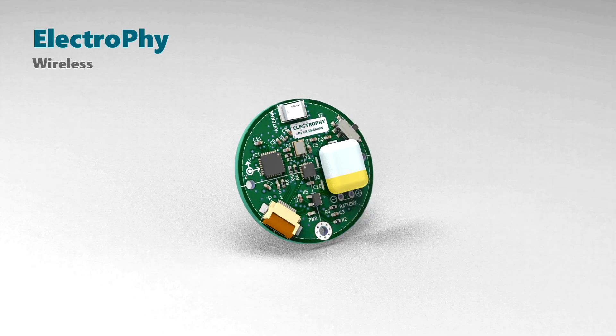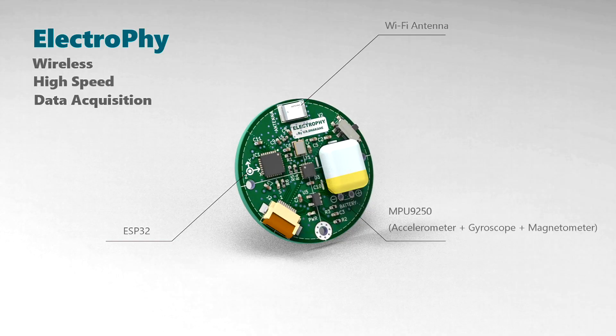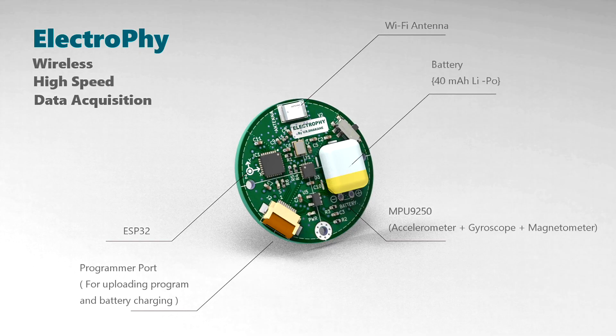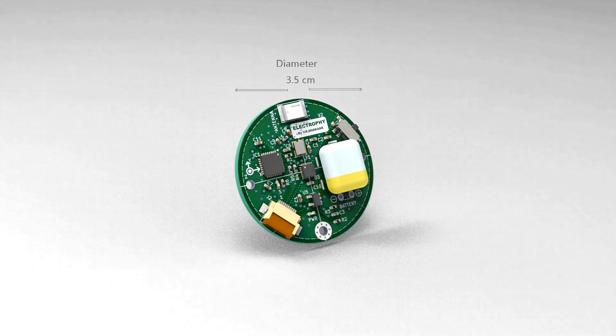Electrofy is a wireless high-speed data acquisition module that features Wi-Fi for seamless data transmission, an ESP32 controller, an MPU9250 sensor, a programmer's port, and a 40 mAh battery. The entire module is compact, with a diameter of just 3.5 cm.